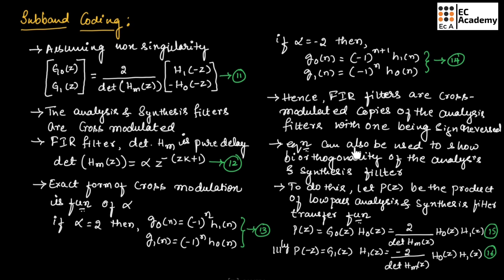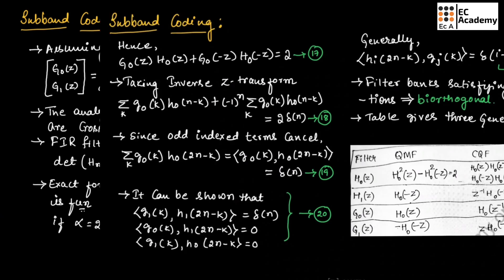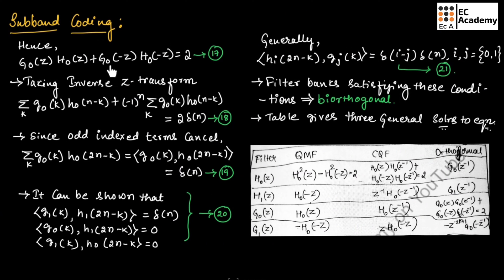These equations can also be used to show bi-orthogonality of the analysis and synthesis filters. Let p(z) be the product of the low-pass analysis and synthesis filter transfer functions. Then P(z) = G0(z)·H0(z) = (2/det(HM(z)))·H0(z)·H1(z). Similarly, P(−z) = G1(z)·H1(z) = (−2/det(HM(z)))·H0(z)·H1(z). Hence, G0(z)·H0(z) + G0(−z)·H0(−z) = 2.